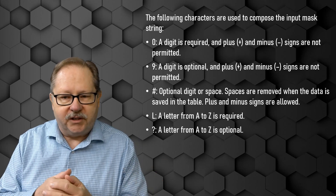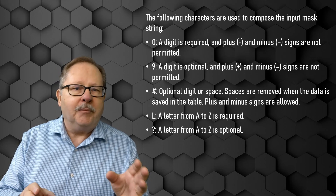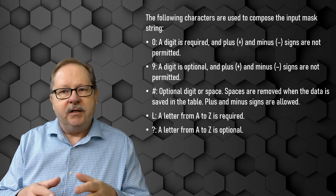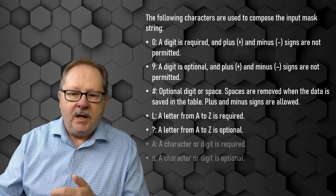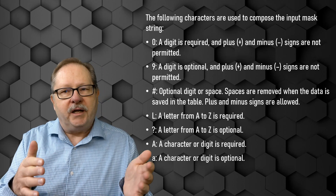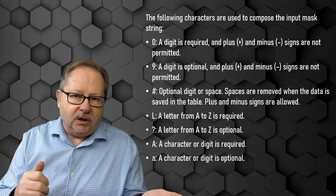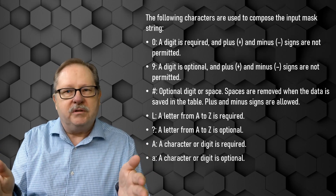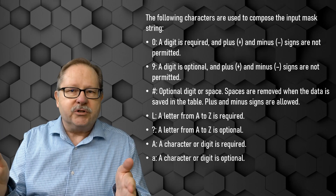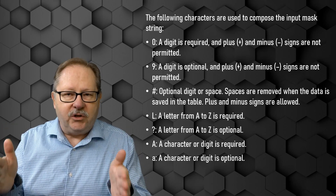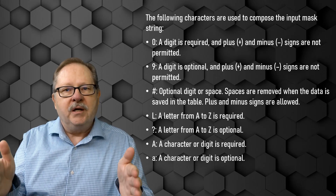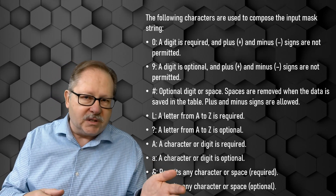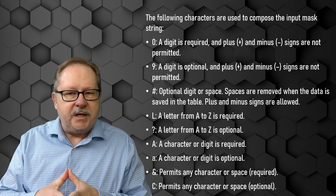You really need a cheat sheet here because none of these make logical sense. A capital L represents a letter that is required. A question mark is a letter A to Z that is optional. Capital A is for a character or digit that is required, and lowercase a is for a character or digit that is optional. When you fill required spaces, the user must enter all of those characters to save the record. The ampersand permits any character or space, and capital C permits any character or space optionally.